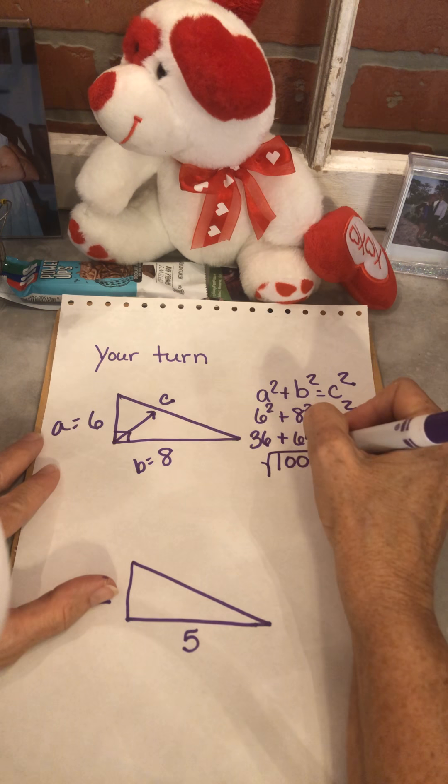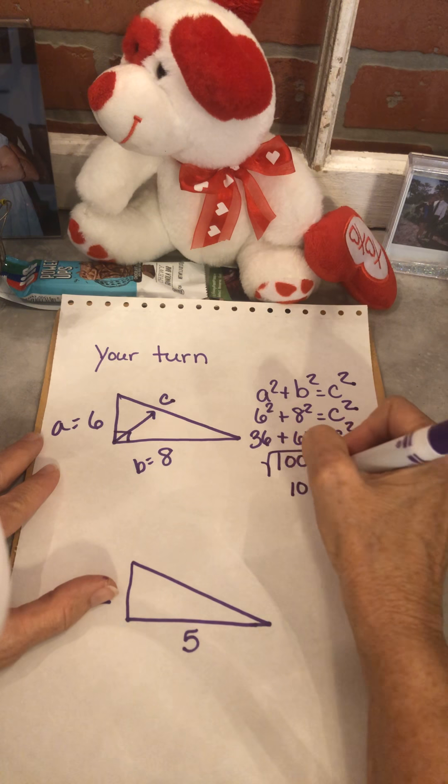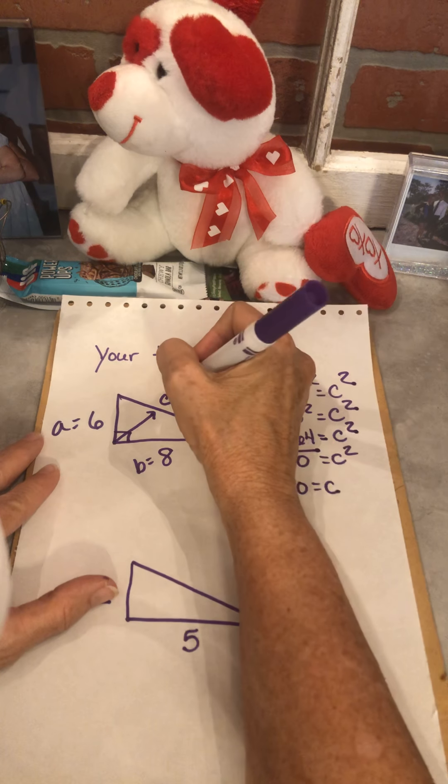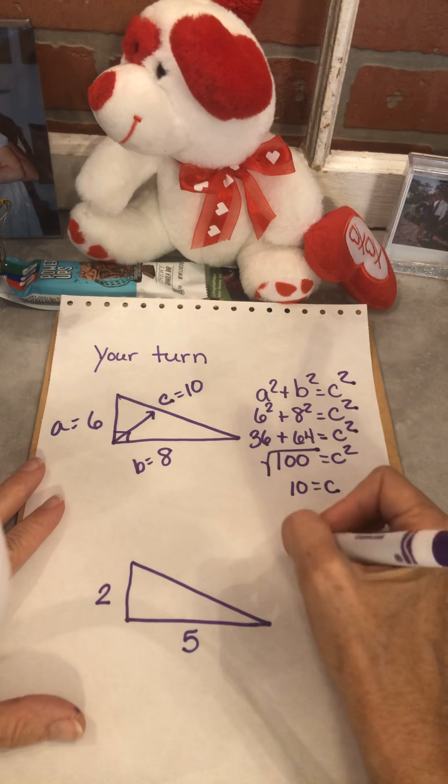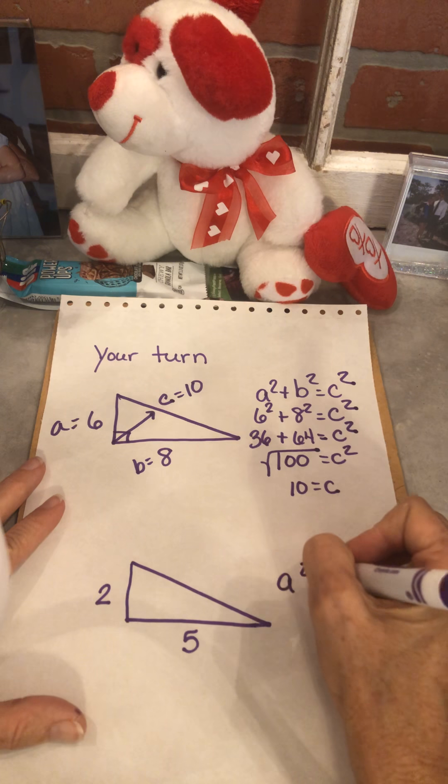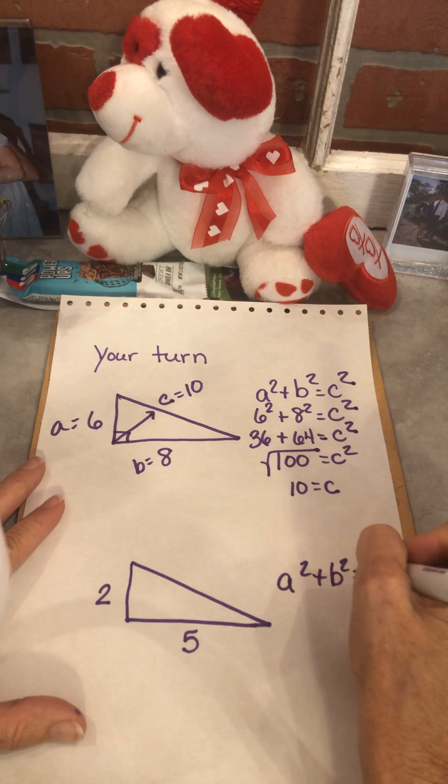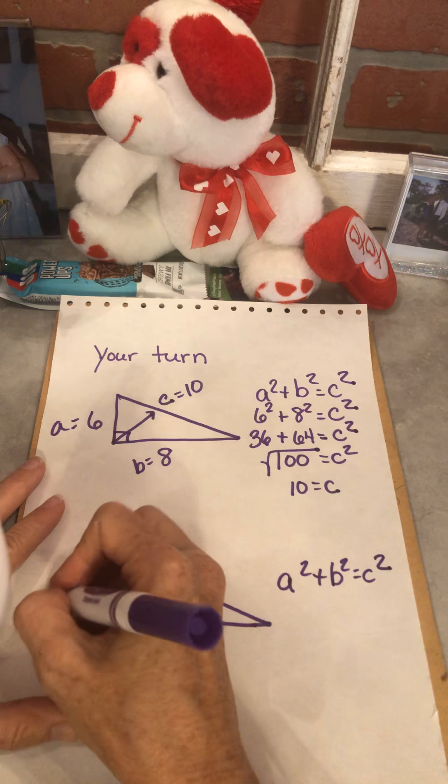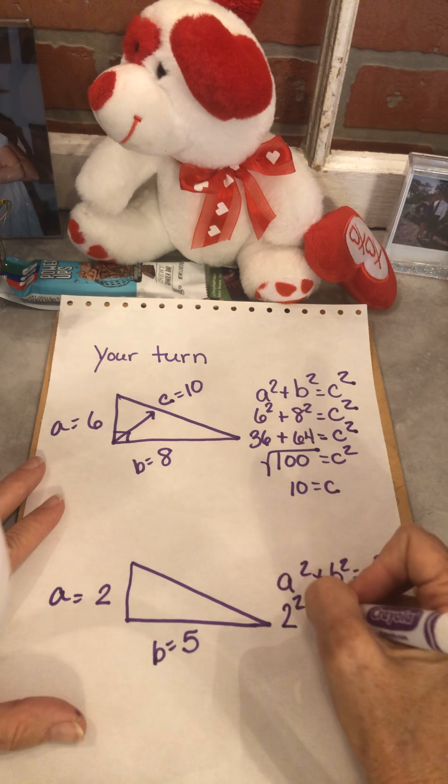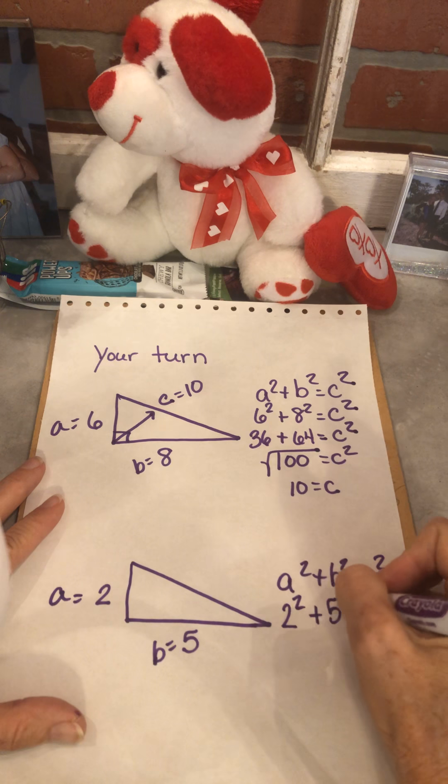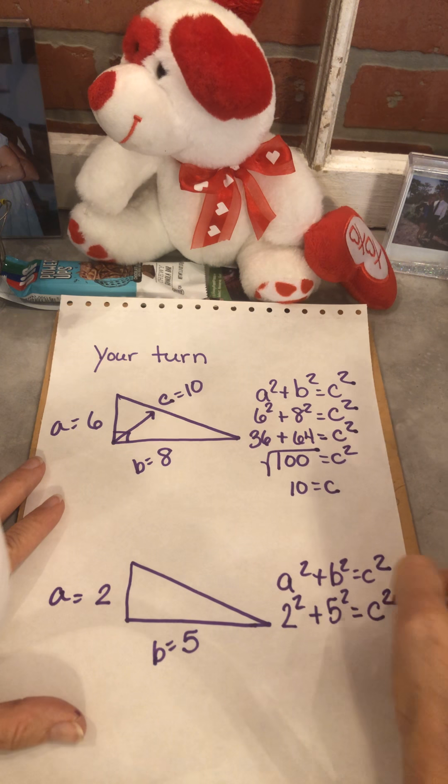6 squared is 36, 8 squared is 64. Add that up, I get 100. Now remember, I need to get the square root of 100. What times what gives me 100? 10. So this is 10. And yes, that is the longest measurement. So I did good on that one.